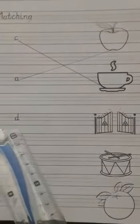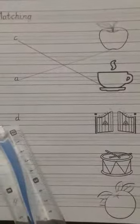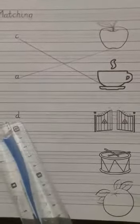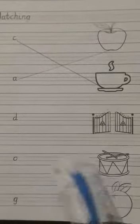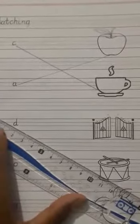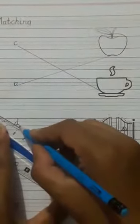Our next sound is D. D, gate? No. D, drum? Yes. Girls, set the ruler and match D with drum.